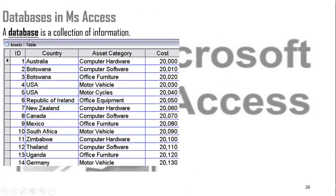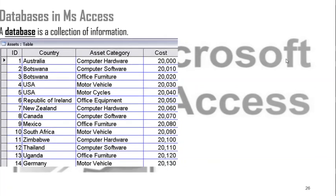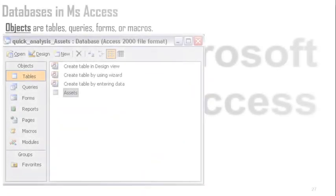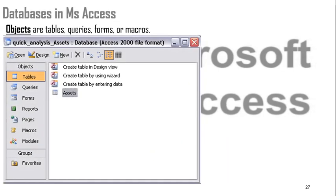What is a database? In Microsoft Access, a database is a collection of information — for example, a table with several columns and rows. In Microsoft Access, you'll find objects: tables, queries, forms, and macros.